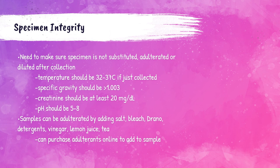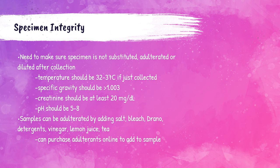For urine drug screens, it's imperative to ensure that the sample is not adulterated, diluted, or substituted. Patients can adulterate their urine specimen by adding bleach, vinegar, lemon juice, detergents, or other adulterants purchased online. Criteria to determine if a specimen is a fresh, unaltered urine sample include: temperature around 32–37°C (close to body temperature), specific gravity greater than 1.003, pH from 5 to 8, and creatinine level of at least 20 mg/dL. If the sample appears tampered with, a recollection can be requested.